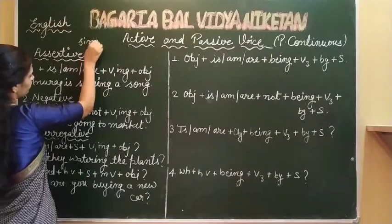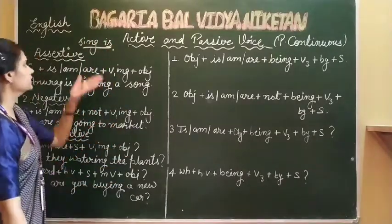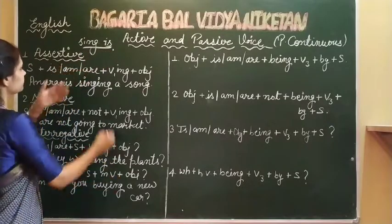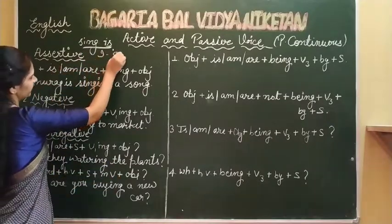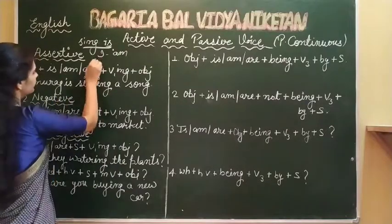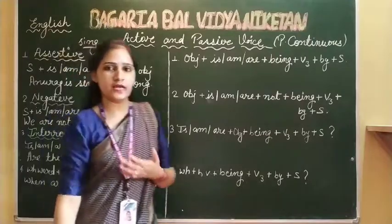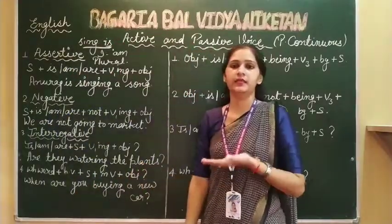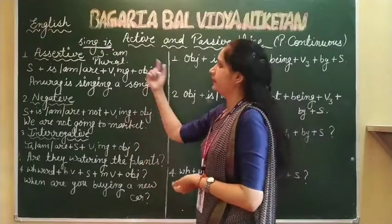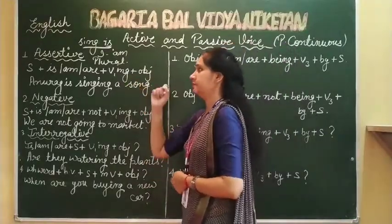'Is' is always used with singular noun - when we talk about only one person or thing. 'Am' is always used only with 'I'. And 'are' is used with plural noun - when we talk about two or more persons, things, or anything. So let's start changing the active sentence to a passive sentence.